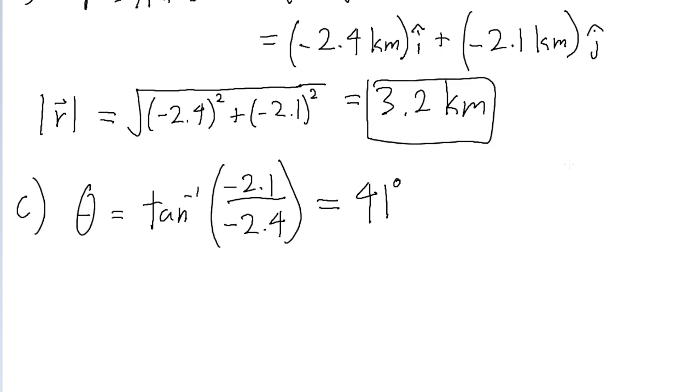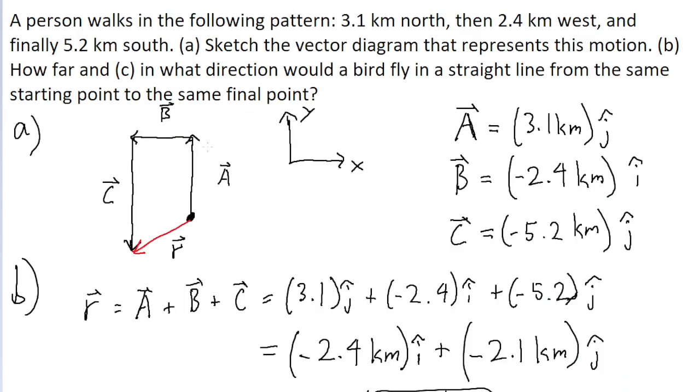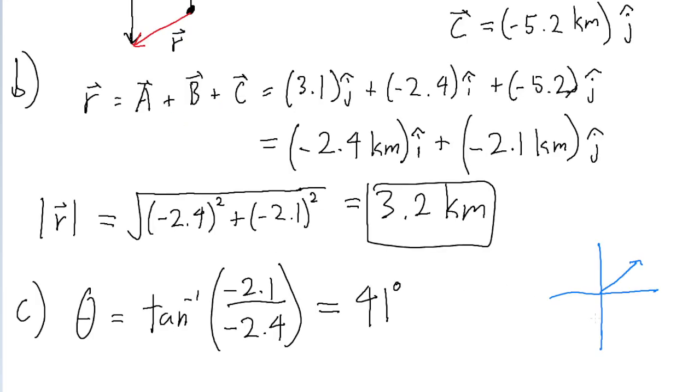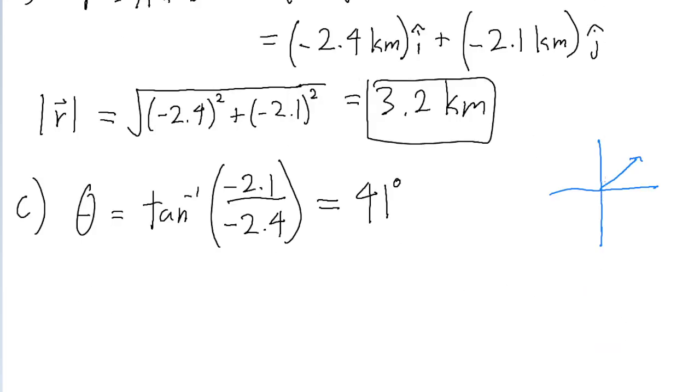But you might notice that an angle of 41 degrees doesn't actually make much sense here. Because if we think of a typical coordinate system, an angle of 41 degrees is going to be pointed in the first quadrant. But if we look at our diagram of the actual direction that the bird is going to be flying in, we can see it's pointing down and to the left. So we would expect that the angle should actually be pointed in the third quadrant.